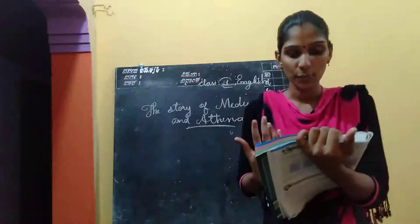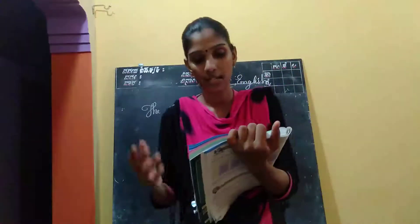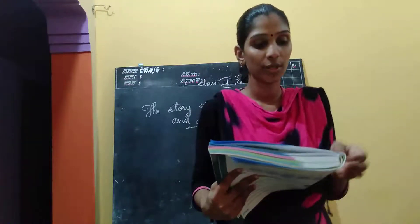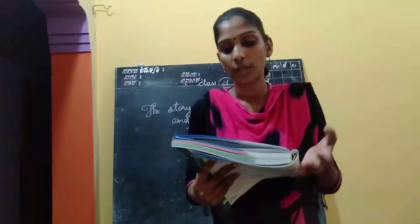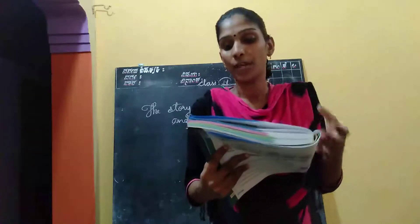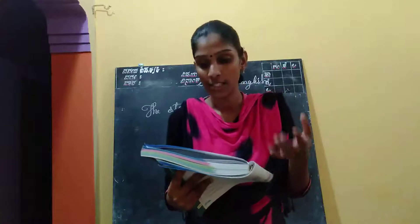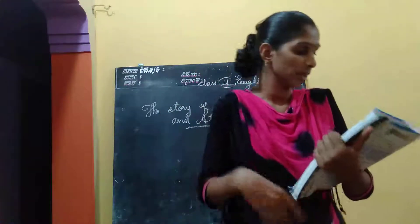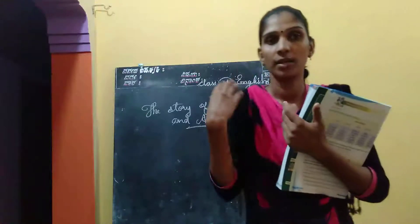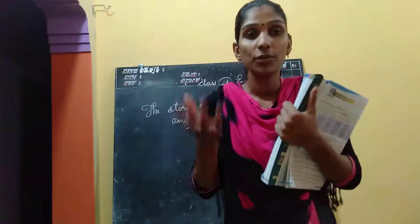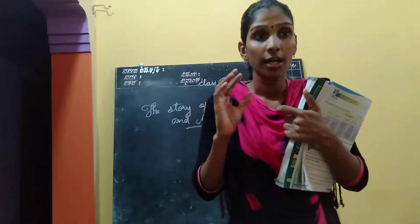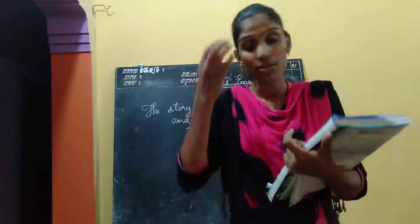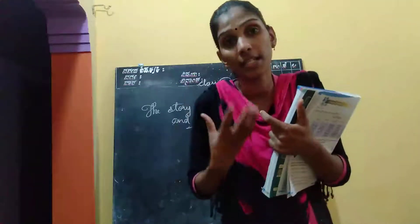In ancient times, pictures and symbols were used as script for writing messages or conducting day-to-day business. Greeks were the first Europeans to use letters to write. The use of the alphabet spread from here to the rest of Europe. In olden days, these people were using pictures and symbols for writing messages and conducting their business.